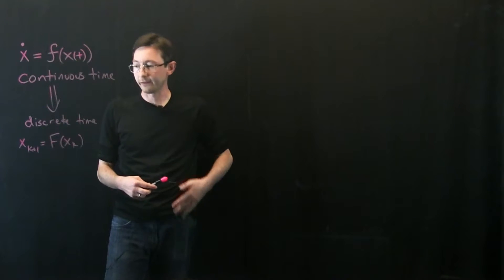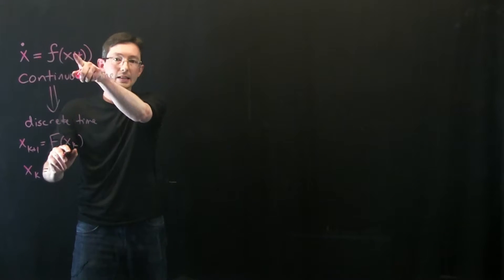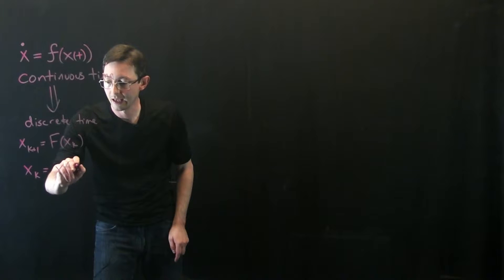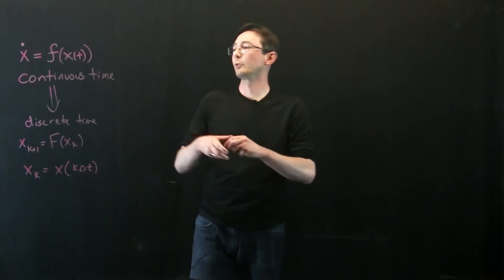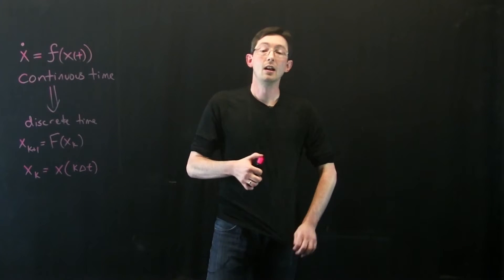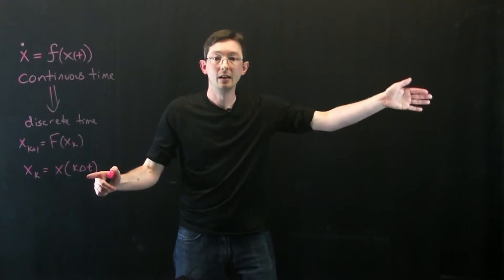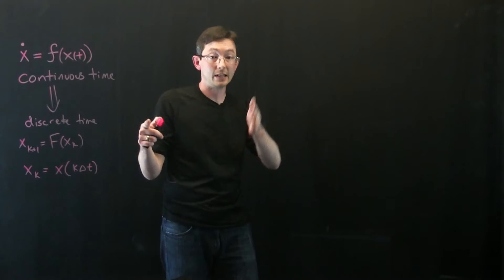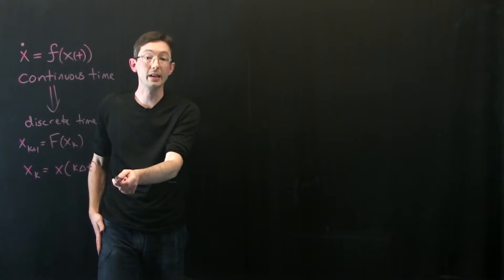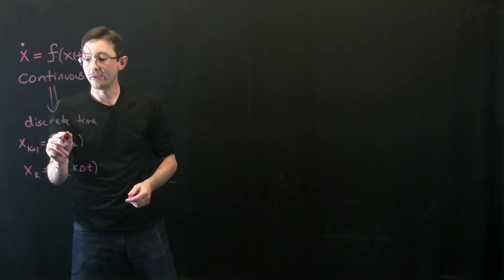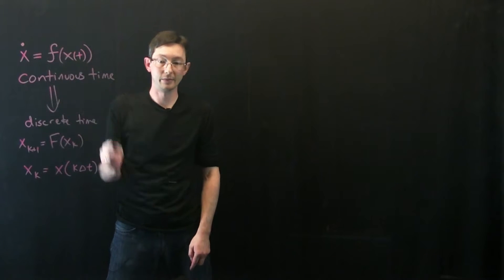And what I could do is I could define x at time k to be this continuous x at time k delta t. So I could be taking delta t time steps. Maybe I have a real continuous physical system like a population, but I sample it every day. And so my delta t might be one day sampling and k would be day 1, k equals 2 would be day 2, day 3, and so on and so forth. So what I could do is I could sample my continuous time system and then I could essentially write my big F in terms of this continuous time differential equation.